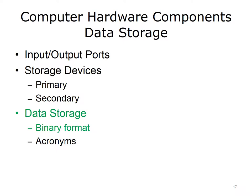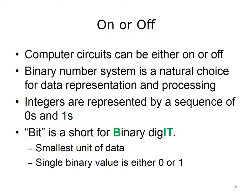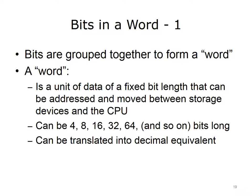Our next hardware component topic is data storage in binary format, where we'll discuss the binary system of data representation. Every circuit in a computer, regardless of its function, can be in only one of two states: it can be carrying an electrical charge and therefore be on, or it cannot be carrying an electrical charge and therefore be off. For this reason, the binary number system is a natural choice for data representation and processing by a computer. In the binary system, any integer is represented by a sequence of zeros and ones. The term bit is short for binary digit. A bit is the smallest unit of data represented in a computer. A bit has a single binary value, either zero or one.